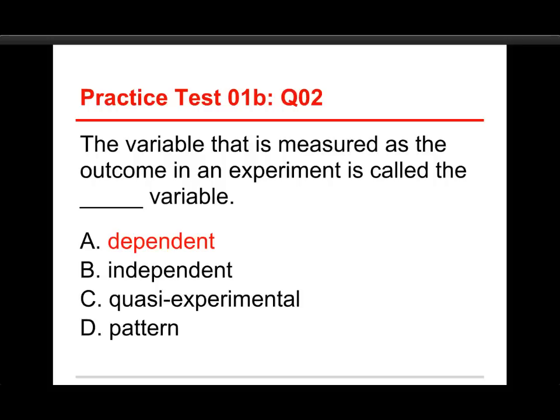The dependent variable's scores depend on what happens in the experiment — it's the outcome variable. The independent variable is the one manipulated by the experimenter, so it doesn't depend on something else. A quasi-experimental variable is used in quasi-experiments, which attempt to use correlational or observational data to reach a causal inference. A pattern variable is used in a particular kind of quasi-experimental study, but those two don't apply to a regular experiment. The outcome variable is called the dependent variable, sometimes abbreviated DV.